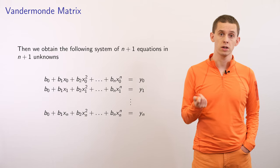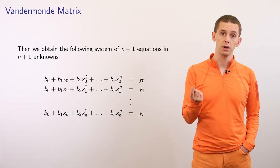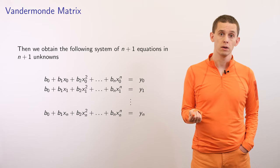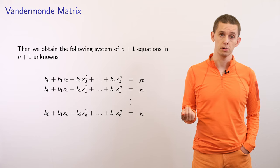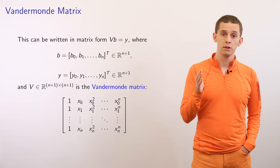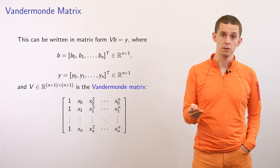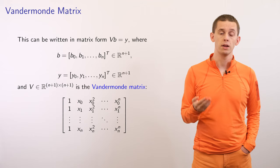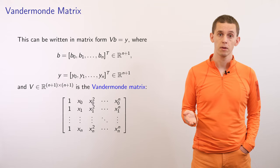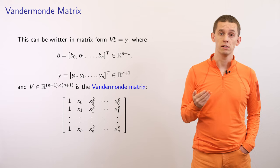Let's write out the system of equations that a polynomial must satisfy. We have n plus 1 equations. The left-hand side of the first equation is our polynomial evaluated at x0, and the right-hand side is the corresponding data point y0, and similarly for all n plus 1 data points. This set of equations can be written in matrix form as a matrix system vb equal y, where b is the set of polynomial coefficients b0 up to bn, and y is the set of data values y0 to yn.